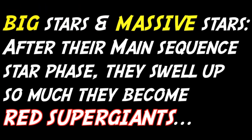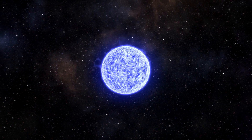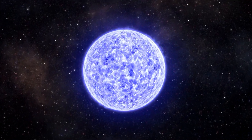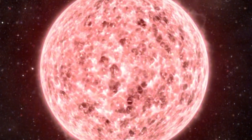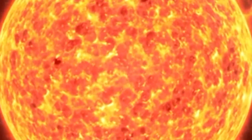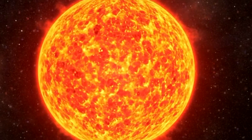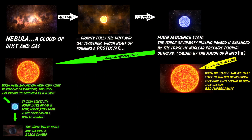Big stars and massive stars, after their main sequence star phase, swell up so much they become red supergiants. The star expands and gets colder until it becomes a red supergiant. When big and massive stars start to run out of hydrogen, they cool and expand so much they become red supergiants.